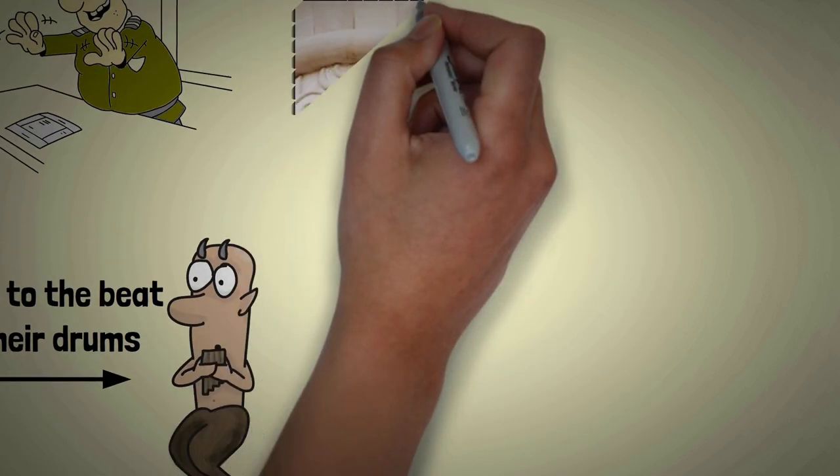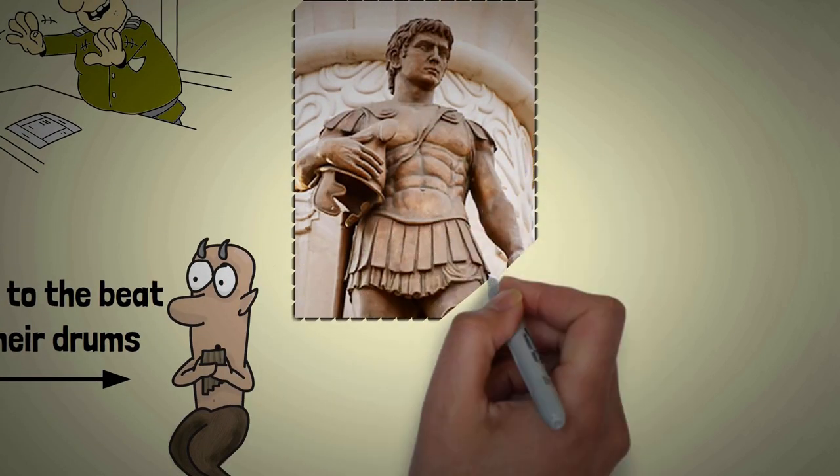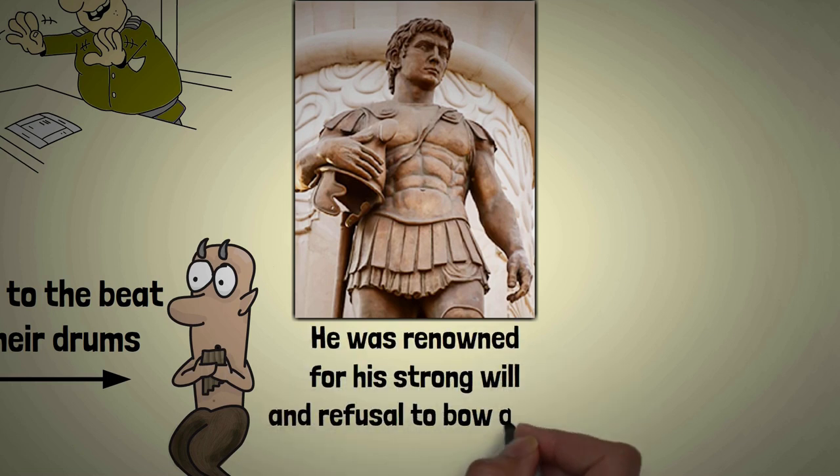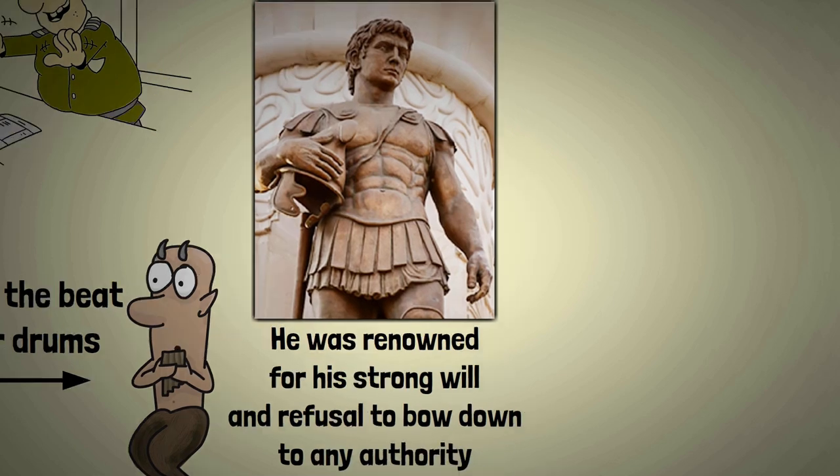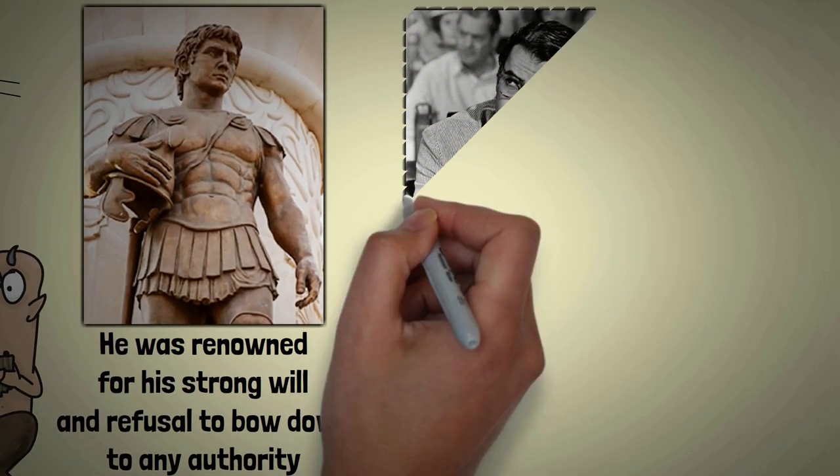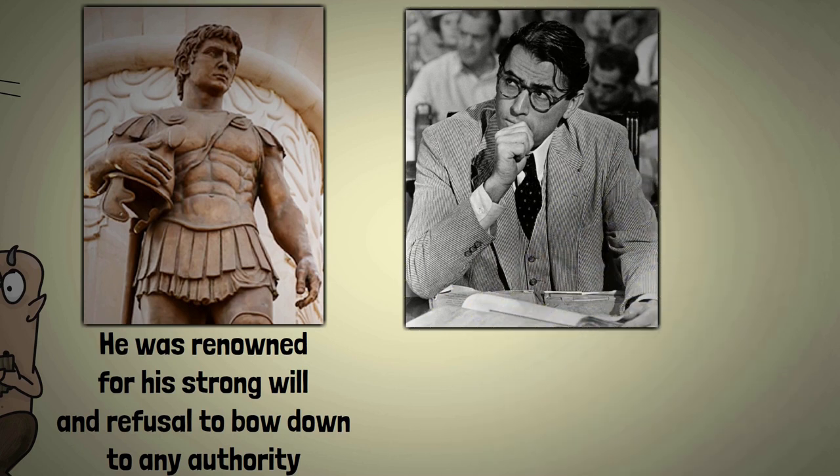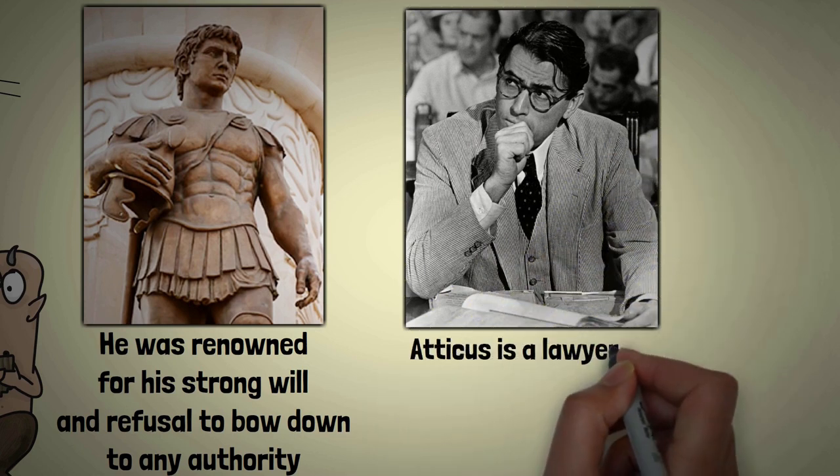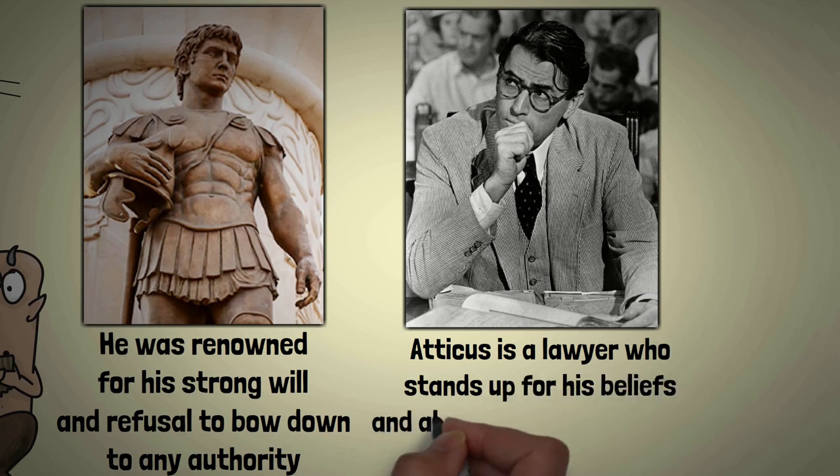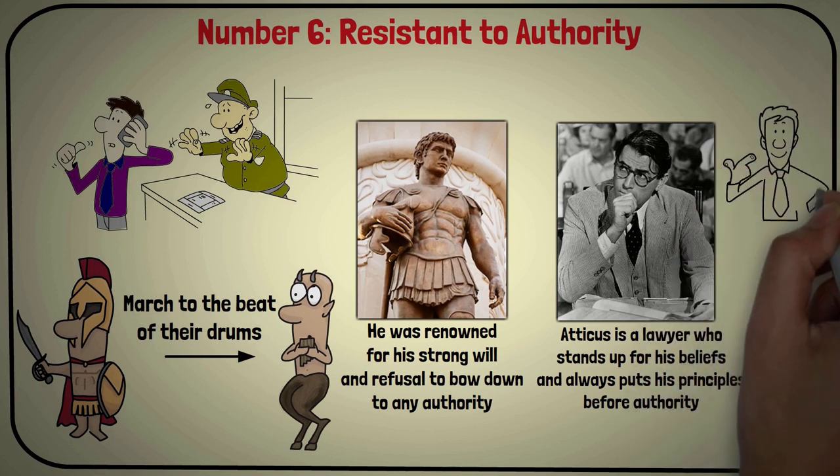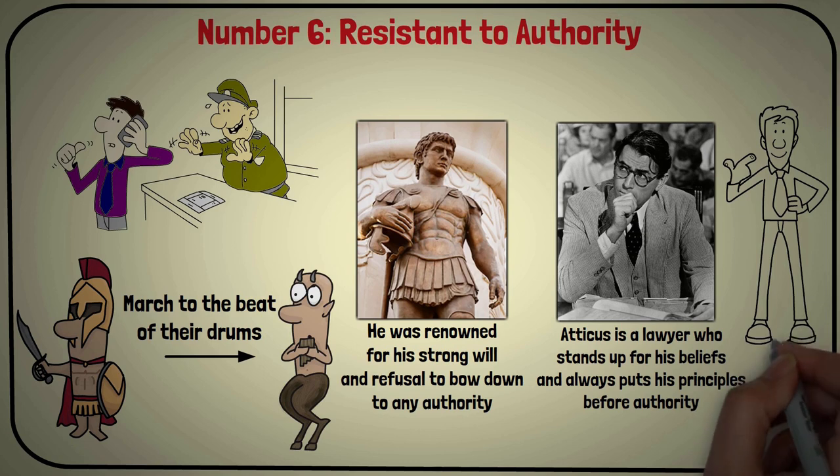Take the example of Alexander the Great, the famous Macedonian king. He was renowned for his strong will and refusal to bow down to any authority. This trait is also seen in the character of Atticus Finch from the classic novel To Kill a Mockingbird. Atticus is a lawyer who stands up for his beliefs and always puts his principles before authority. This same quality is often seen in Sigma males who believe that the only person who can control them is themselves.